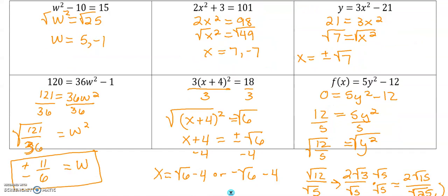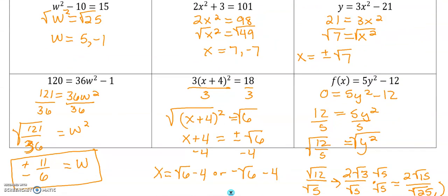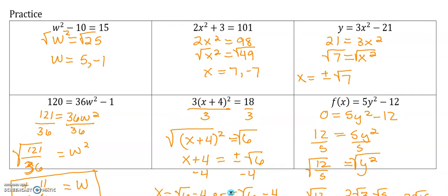The top row wasn't too bad. The bottom row got a little bit sketchy there. So our top row, our two answers are 5 and negative 1, x equals 7 and negative 7, and then x equals just plus or minus the square root of 7.